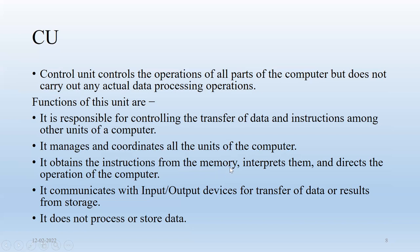The control unit fetches instructions from the memory, interprets them, and directs the operation of the computer. Data is entered to the system and stored in memory; from that memory, instructions are taken and processed. The control unit communicates with input and output devices for transfer of data or results from storage, but it doesn't process or store data itself.